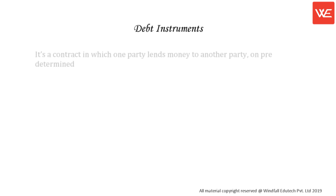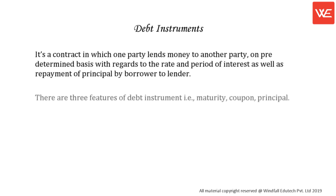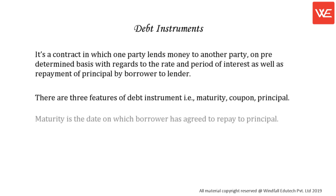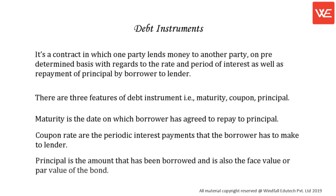Debt Instruments. It is a contract in which one party lends money to another party on a pre-determined basis with regards to the rate and period of interest as well as repayment of principal by the borrower to the lender. There are three features of a debt instrument: maturity, coupon, and principal. Maturity is the date on which the borrower has agreed to repay the principal. Coupon rate refers to the periodic interest payments the borrower has to make to the lender. Principal is the amount borrowed and is also the face value or par value of the bond.